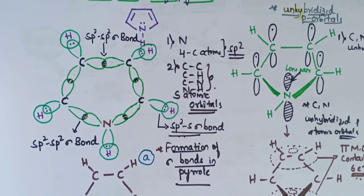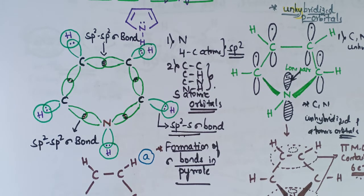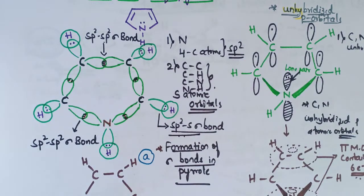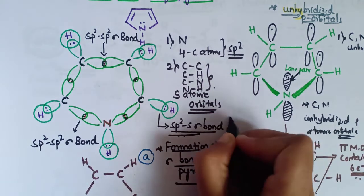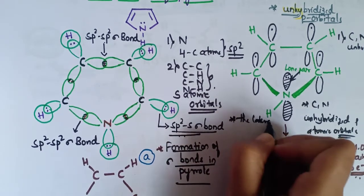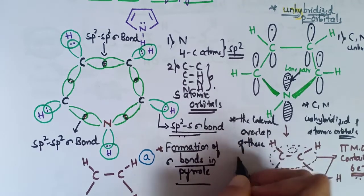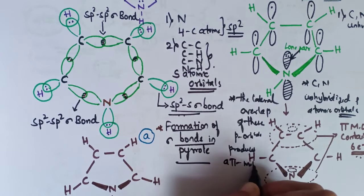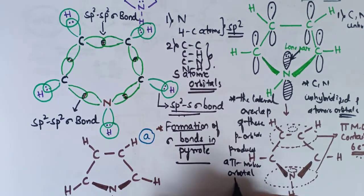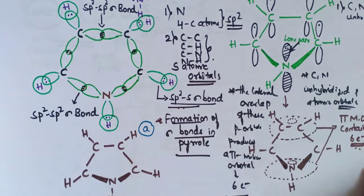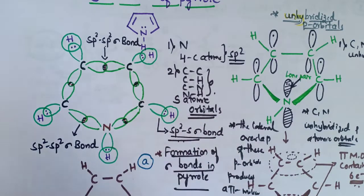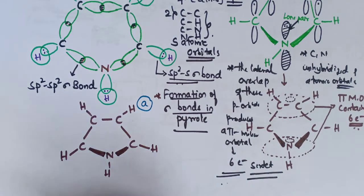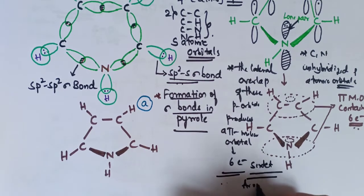The lateral overlap of these p orbitals produces a pi molecular orbital containing six electrons — one, two, three, four, five, six. This pi molecular orbital with six electrons is frequently referred to as an aromatic sextet.